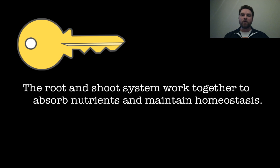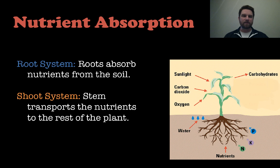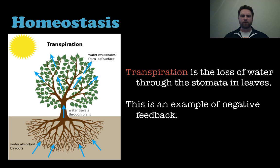Our second key concept: the root and shoot system work together to absorb nutrients and maintain homeostasis. For nutrient absorption, the root system absorbs nutrients from the soil, and then the stem of the shoot system transports those nutrients to the rest of the plant through the xylem for water or the phloem for everything else.